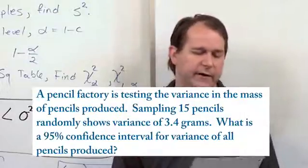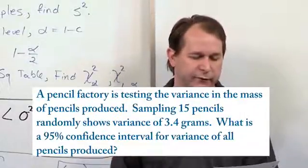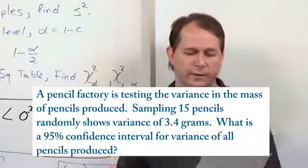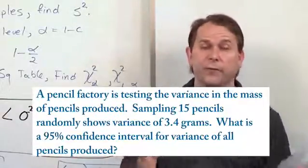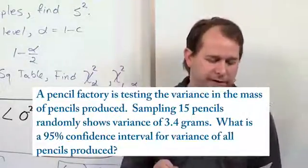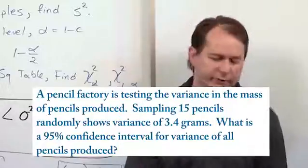So in this case, we're testing the variance of the mass of pencils produced. Sampling 15 pencils, we find the variance is 3.4 grams. We're trying to find a confidence interval for what the whole factory is doing. So we only have a very small sample of 15 pencils. We want to find a 95% confidence interval.